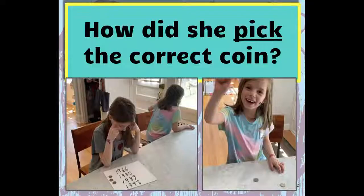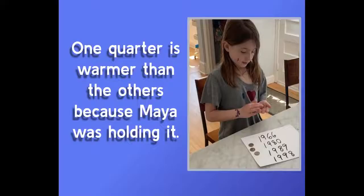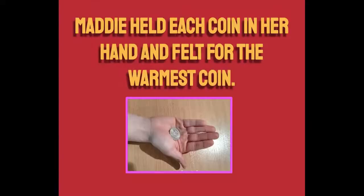Now, back to our question. How did she pick the correct coin? So one quarter is warmer than the others because Maya was holding it. And Maddie held each coin in her hand and felt for the warmest coin.